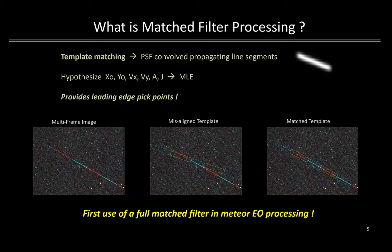So what is match filtering in the context of meteor image processing? Essentially it is a template matching technique where propagating line segments across multiple frames are PSF convolved and compared to the actual multi-frame illuminated meteor trace, as shown in the left-most panel. A single frame PSF convolved line segment template is shown in the upper right. Given a hypothesized motion template of starting position, speed, deceleration, and optionally jerkiness, the template and imagery are combined to form a maximum likelihood estimate.